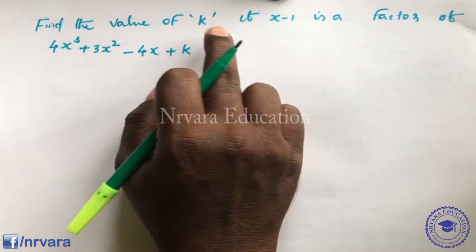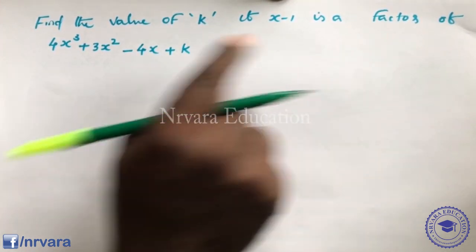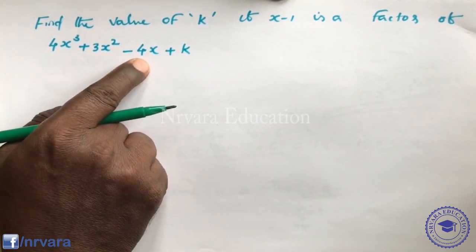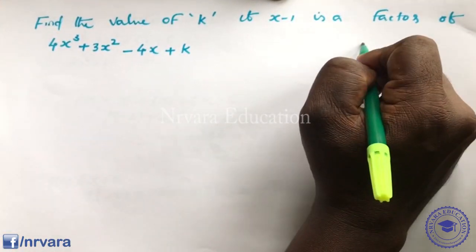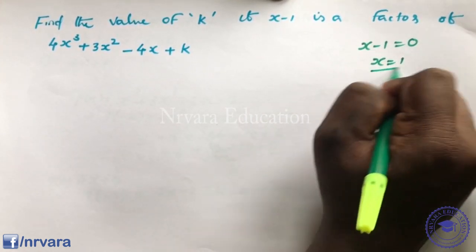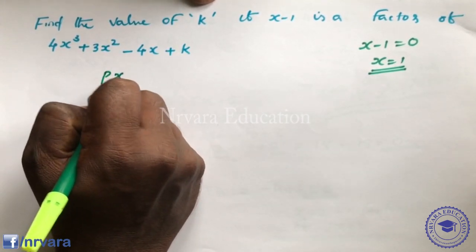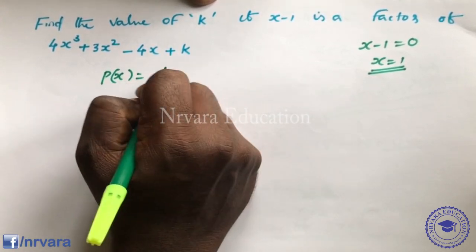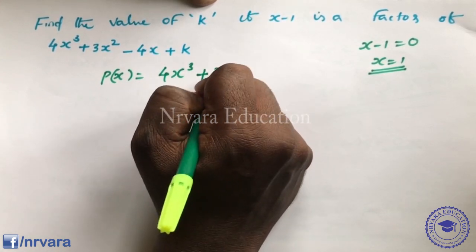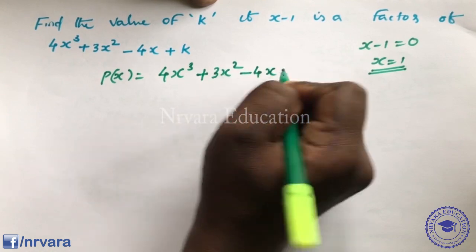Find the value of k if (x - 1) is a factor of 4x³ + 3x² - 4x + k. Since (x - 1) is a factor, we use the factor theorem and evaluate p(1) = 0.